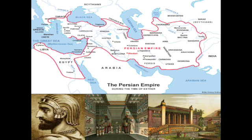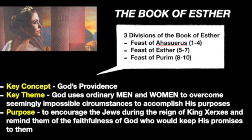The events of the book of Esther take place in Persia between 483 to 473 BC. The book fits into the 58 years between Ezra 6 and Ezra 7 — between the first and second return. If you want to read it in chronological order, go to Ezra 1 through 6, then Esther, then back to Ezra 7 through 10. The theme is that God uses ordinary men and women to overcome seemingly impossible circumstances to accomplish his purposes, and the purpose is to encourage the Jews with how God delivered them during the reign of King Xerxes, reminding them of his faithfulness. The key word is providence — God's name is not mentioned, but you see his providence working through the scenes, bringing about a deliverance for the people of God.